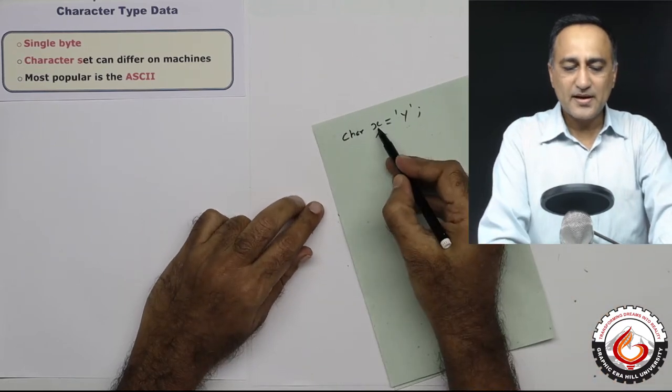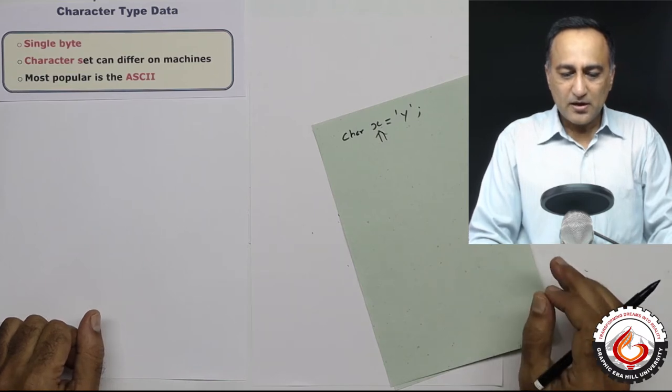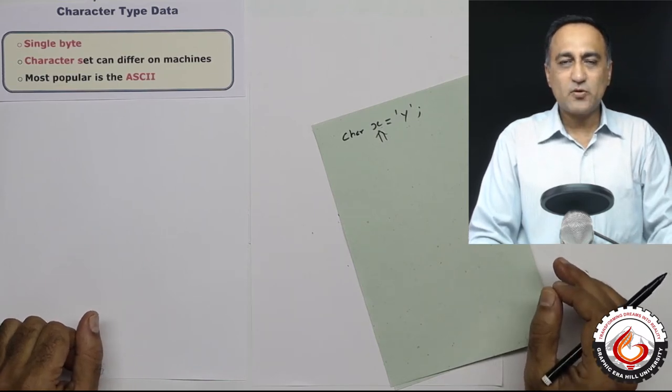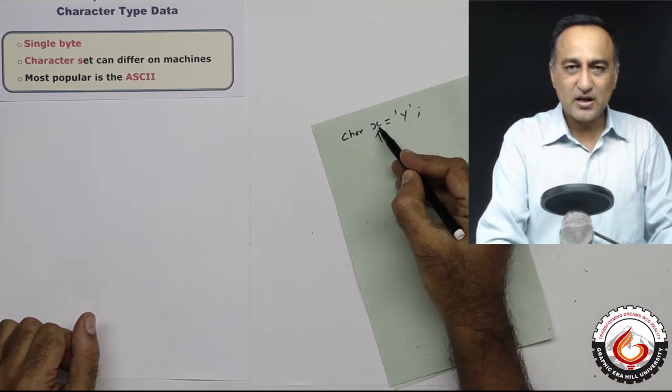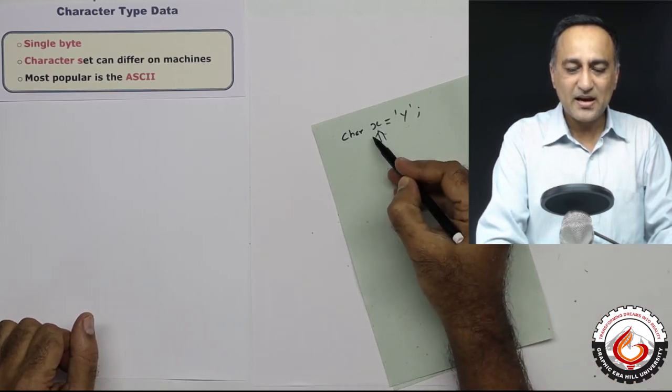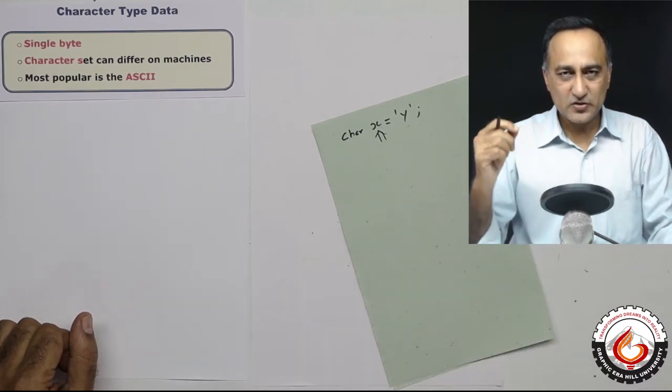In memory, x is going to occupy one single byte. The main or the important thing to understand about character data type is these character data types are not represented as A, B, I, J, X, Y internally. They are represented in terms of ones and zeros.